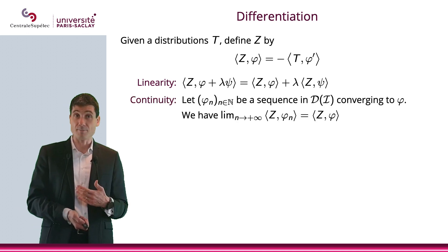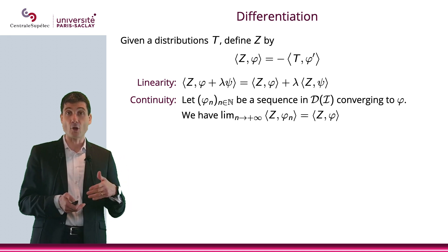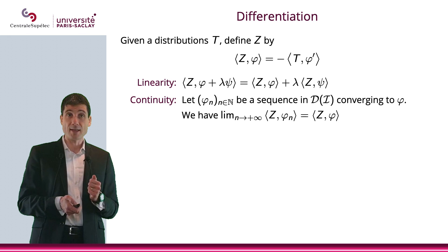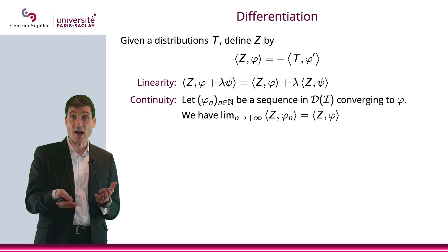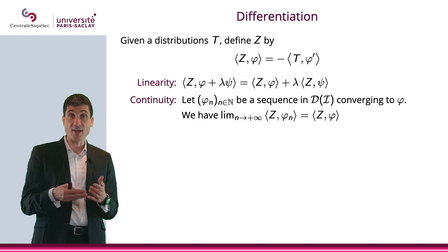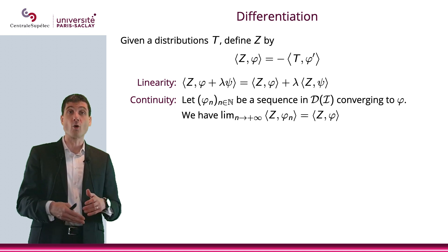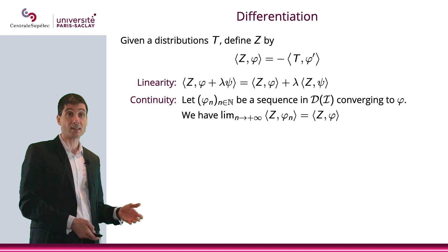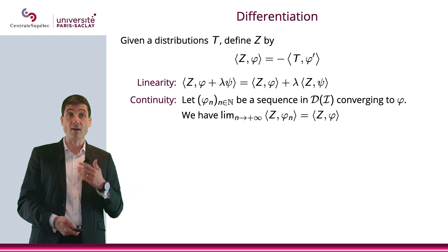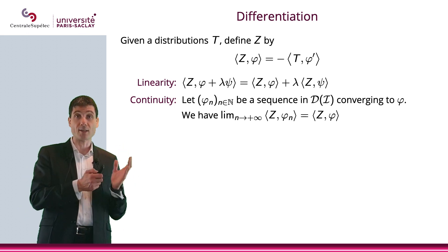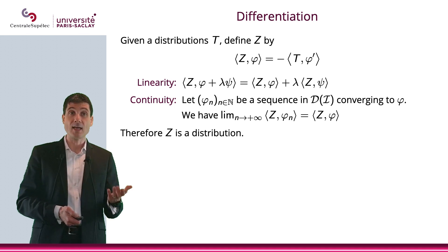What about continuity? If I consider a sequence of elements of D, φ_n, converging toward φ, then φ'_n will also be converging toward φ' in D. Therefore, -t(φ'_n) will converge toward -t(φ'), which means that the limit of z(φ_n) is z(φ). Therefore, z is both linear and continuous — it is a distribution.